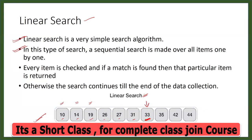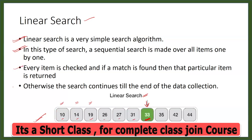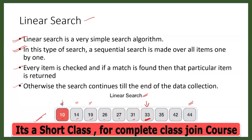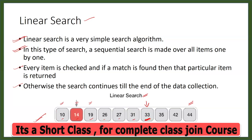This is linear search. Every item is checked, and if a match is found then the particular item is returned. Otherwise the search continues till the end of the data collection. If we don't find it at the last element, we say that the element is not found.